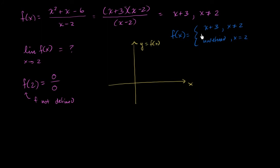So defined this way, f of x is equal to x plus 3. So if this is 1, 2, 3, we have a y-intercept at 3. And then the slope is 1. The slope is 1. And it's defined for all x's except for x is equal to 2.